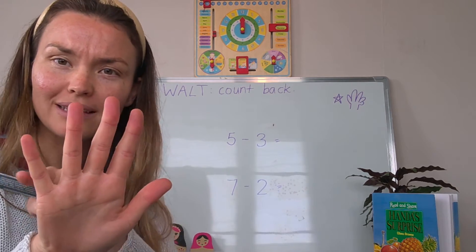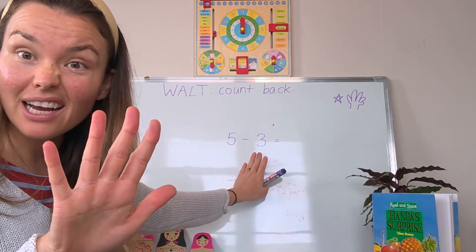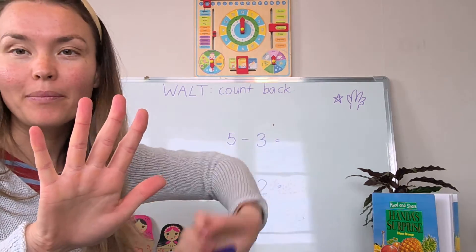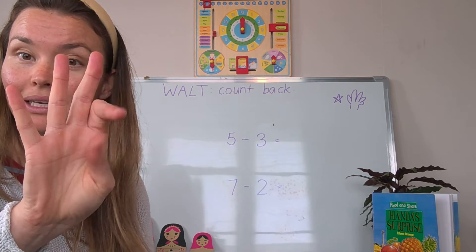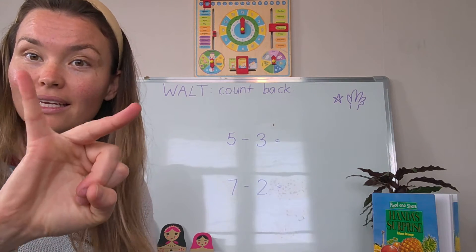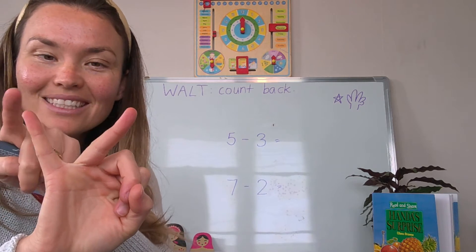Now once we've done that we have to take away, that means hide the smaller number three. So let's take away three fingers. One, two, three. How many fingers are still standing? That's right. Two.